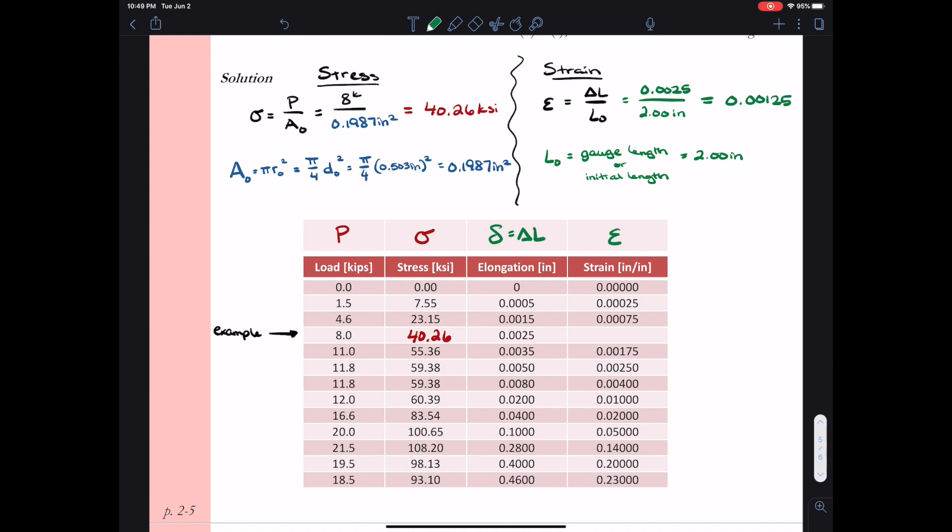Now again, I have units of inches over inches. So my strain becomes unitless. Or I can think of it in terms of inches per inches. So for every inch of material, it stretches 0.00125 inches. So 0.00125 inches of stretch per inch of material. Alright, I plugged that in.